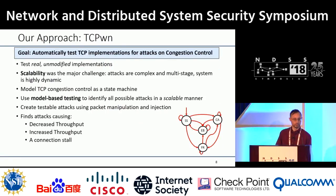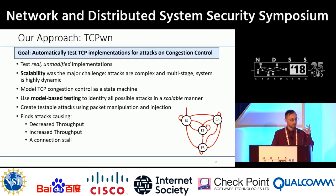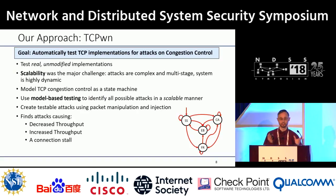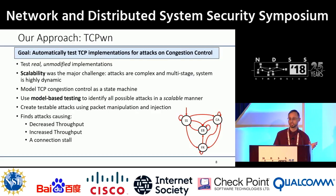Therefore, we developed a new system, TCPwn, with the goal of automatically testing TCP implementations for attacks on congestion control. The key point is we want to test real unmodified implementations without instrumenting or modifying them, which makes scalability the major challenge, because these attacks are complex and multi-stage and congestion control is very dynamic. Brute force approaches simply don't scale. Instead, we model congestion control as a state machine and use model-based testing to identify all possible attacks in a scalable manner. We then create testable attacks using packet manipulation and injection, searching for attacks causing decreased throughput, increased throughput, or a connection stall.